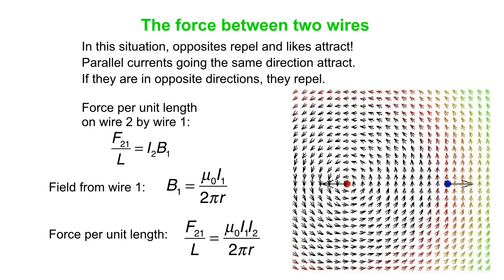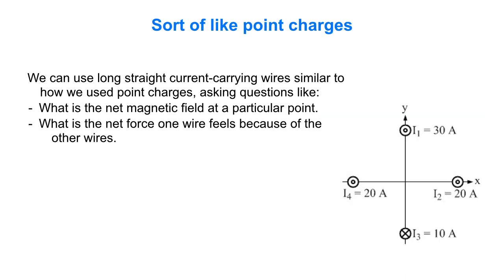One thing to keep in mind is we use long straight current wires similar to the way we use point charges for electric fields. We ask about the net magnetic field at a particular point or the net force one wire feels because of the other wires. These are actually cross-sectional pictures, a slice through a set of four wires carrying current either into or out of the screen, but we treat them much the same way we treat point charges.